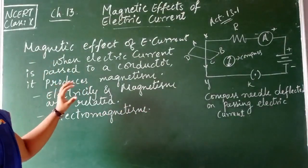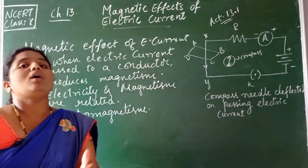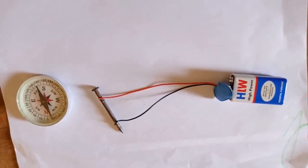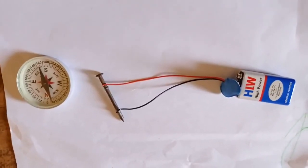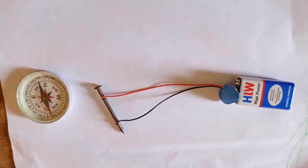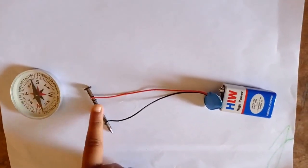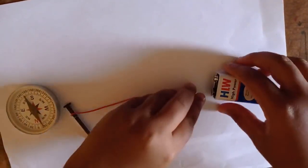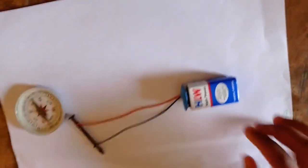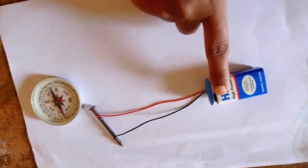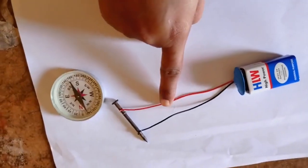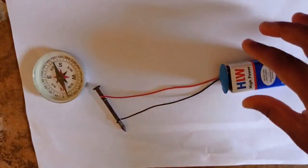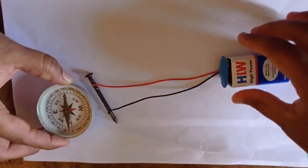To understand this activity more clearly, let us look at a small video clip. In this activity, we perform a simple demonstration to understand what happens to the compass needle when brought near a current-carrying conductor. The materials used are a compass, iron nail, cap, and battery. When the cap is closed, the current from the battery flows into the wire and then into the nail.